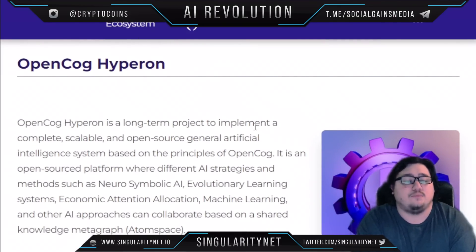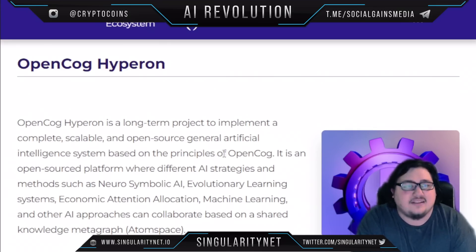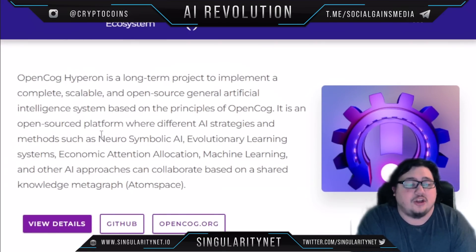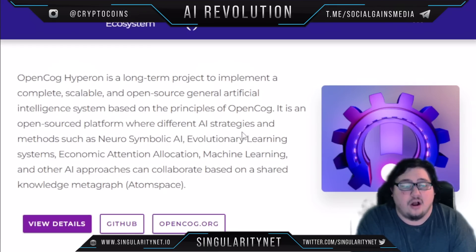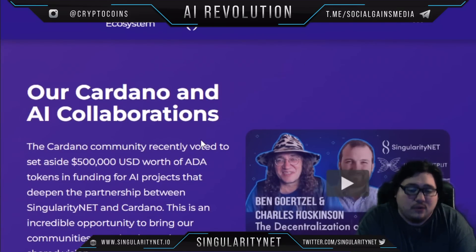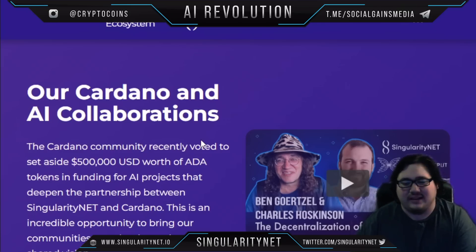Let's talk about OpenCog Hyperion. It's a long-term project to implement a complete, scalable, and open-source general artificial intelligence system based on the principles of OpenCog. It is an open-source platform where different AI strategies and methods — such as neuro-symbolic AI, evolutionary learning systems, and more — can collaborate based on a shared knowledge metagraph.